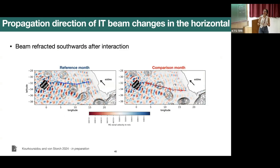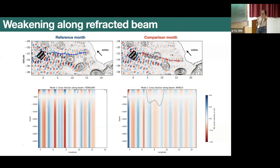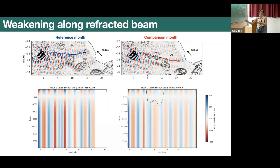Continuing with the results: this is the beam during the reference month with no eddy contact. During the comparison month when the eddy has interacted with the beam, the propagation direction of the beam has changed — it has been refracted southward. Looking at a cross section along those beams for mode one, the structures are mainly uniform along the water column. There is dissipation as the beam propagates away from the generation point, but this dissipation is much stronger when the eddy is present — not only inside and below the eddy, but also in the lee part after the interaction.